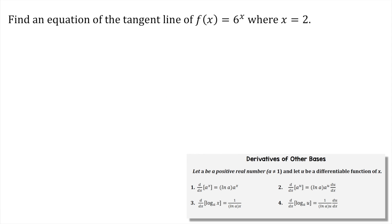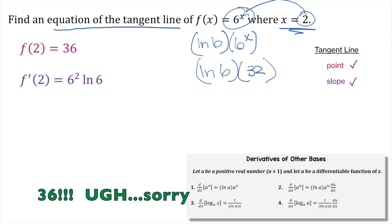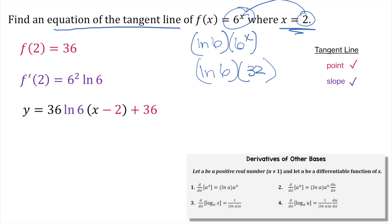Last one — we're going to find the equation of a tangent line again. Any time we need to find the equation of a tangent line, we need a point and a slope. Our function is 6 to the x at x equals 2. For the point, f of 2: just plug in 2 for x, so 6 squared is 36. For the slope, f prime of x is ln of the base times repeat the function — at x equals 2, that's ln of 6 times 36. Then pop that into point-slope form.